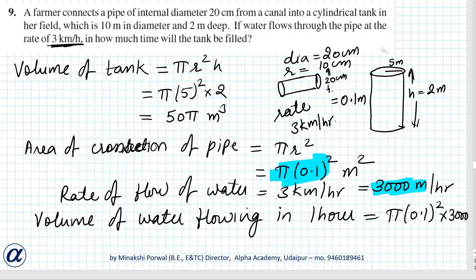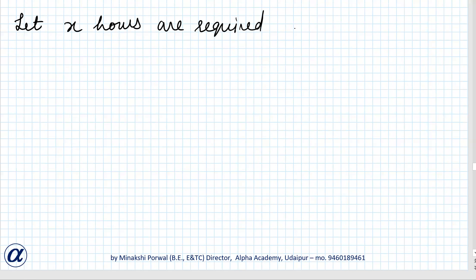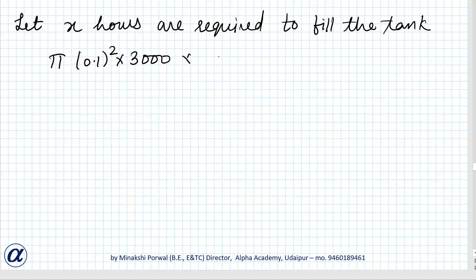They are asking how much time will this tank take to fill. So let x hours be required to fill the tank. Therefore: π into 0.1 squared into 3000 into x is equal to the volume of the tank, which is 50π.